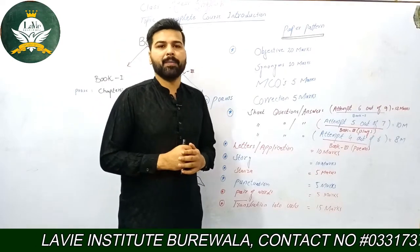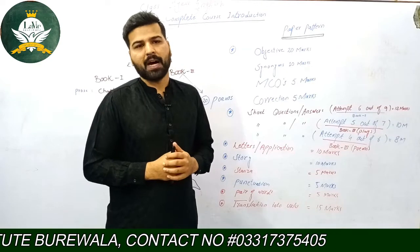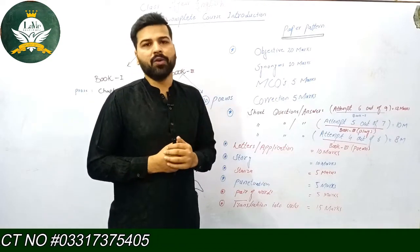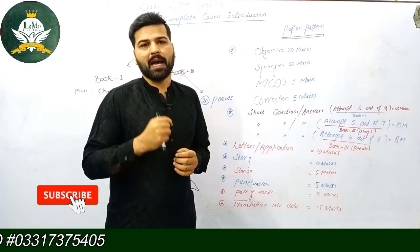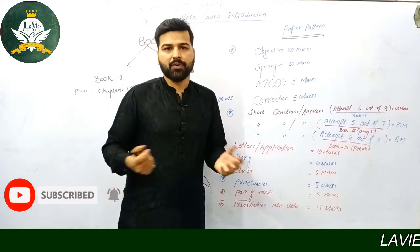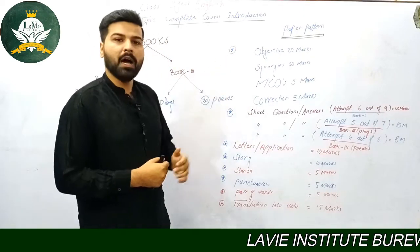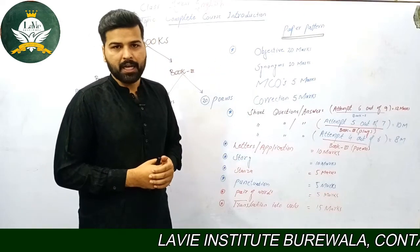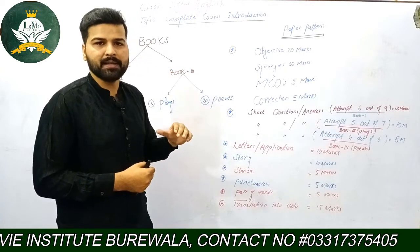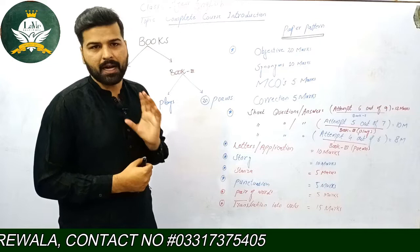یعنی جو chapters آپ نے پڑھے ہیں، جو آپ نے انہیں comprehend کیا ہے، اسی کے اندر سے آپ سے MCQs type question آئے گا جسے آپ نے tick کرکے answer دینا ہوگا۔ اور objective marks کے اندر last میں آپ کے grammar portion سے correction کا part آئے گا، کہ آپ کو sentences دیے ہوں گے جن میں سے آپ نے select کرنا ہوگا کہ کون سا sentence grammatically correct ہے۔ تو یہ 20 marks کا آپ کا objective part ہے — synonyms کہاں سے، MCQs کہاں سے، اور correction کہاں سے آئے گی۔